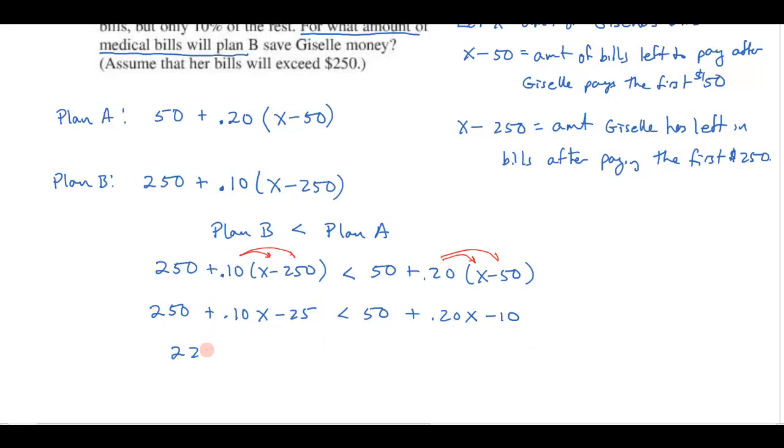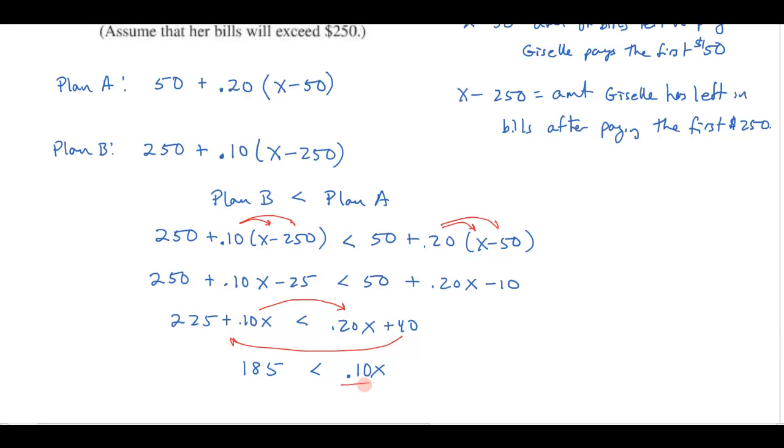Let's combine my like terms. I've got 225 plus 0.10x is less than 0.20x plus 40 and let's get all my x's on one side. I'm going to take this 0.10x and bring it over on this side by subtracting 0.10x. I'm going to take the 40 over on this side. That's going to give me 0.10x if I subtract 0.10x from both sides. If I subtract 40 from both sides, that's going to give me 185. So then I can just divide both sides by 0.10, or another way of thinking is I could have multiplied both sides by 10, and that would move my decimal over to 1x and that's actually easier to multiply by 10, I just get 1850. So I get that my x value is greater than 1850.